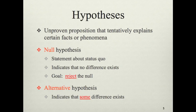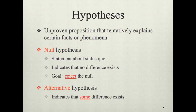Now that we understand the importance of a sound theoretical rationale for a hypothesis, let's discuss hypotheses in general. A hypothesis is an unproven proposition that tentatively explains certain facts or phenomena. Hypotheses make inferences about populations. Technically in statistics, we test whether there is no effect, no difference, or no whatever — and we call that the null hypothesis. The null hypothesis is a statement about the status quo; it suggests that no difference exists. Our goal in most scientific endeavors is to reject the null.